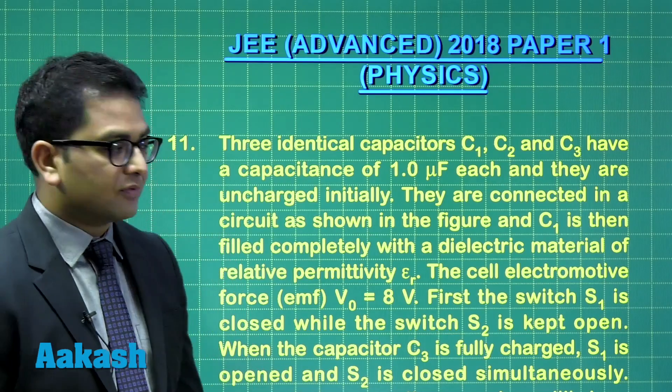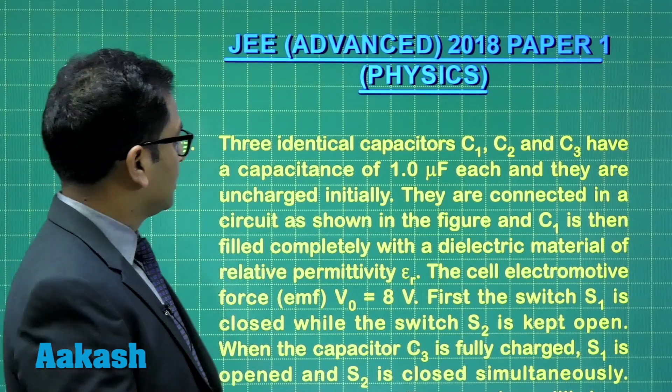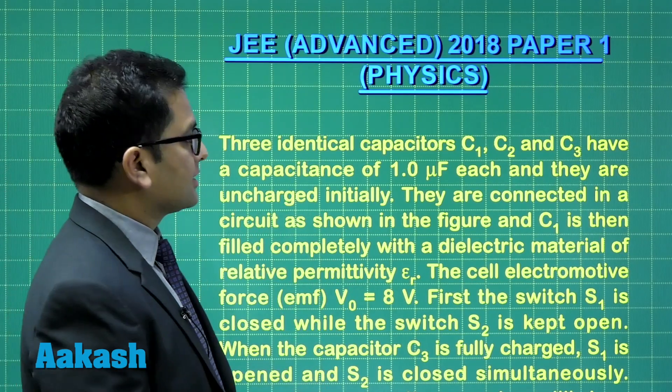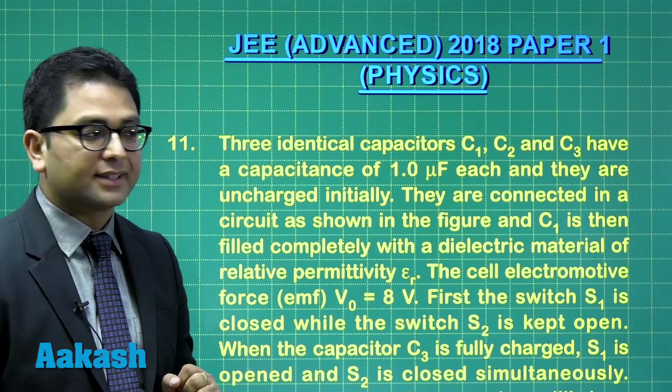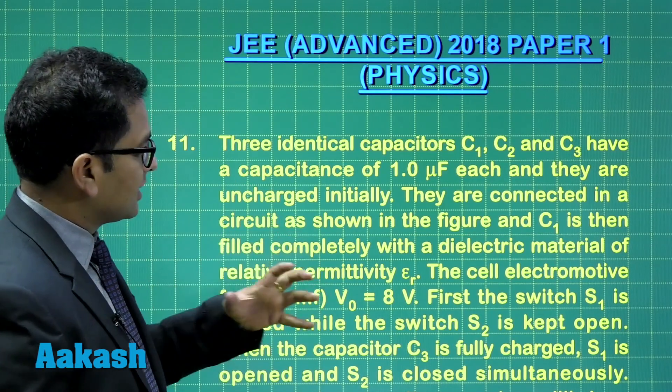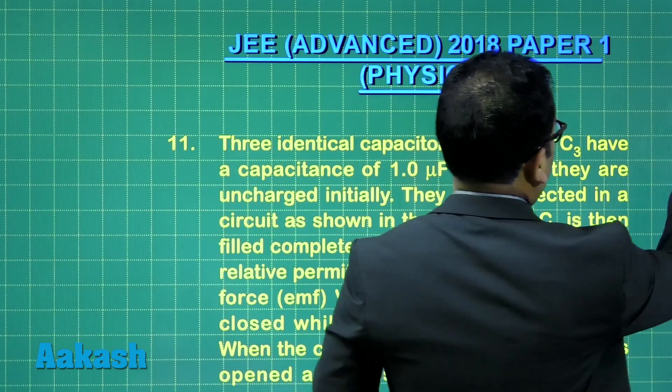Okay, question number 11 from electrostatic and more precisely from capacitor. Three identical capacitors, C1, C2, and C3, have a capacitance of 1 microfarad and they are uncharged initially. They are connected in a circuit as shown in the figure.